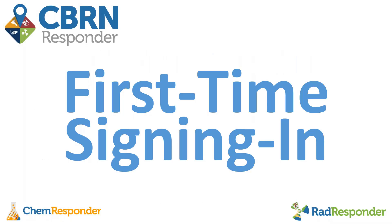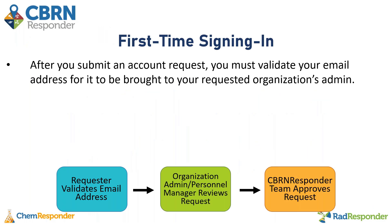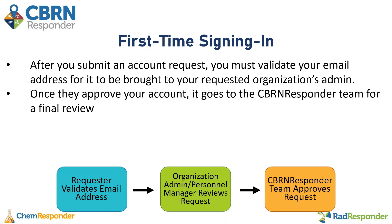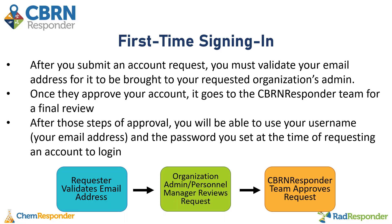We will start by talking about signing in once your account has been approved. After you submit an account request, you first must validate your email address for it to be brought to your requested organization's admin. After you click that link in your email, the organization admin will approve your account, and then it goes to the CBRN Responder team for a final review to ensure that you meet all requirements and don't already have an account. After those steps of approval, you'll be able to use your username, which is your email address, and the password you set at the time of requesting an account to log in.